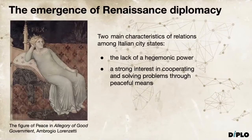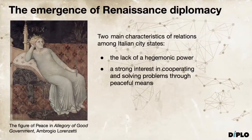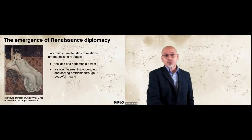The emergence of Renaissance diplomacy is usually associated with two main characteristics of relations among Italian city-states. First is the lack of hegemonic power, and second is a strong interest in cooperating and solving problems and conflicts through peaceful means. These two building blocks are important because we'll see them later on during the 19th century, where Kissinger described that period as a balance of power period. The key is that there is no hegemonic power and that it is better to negotiate, engage, and reach compromise than fight and impose military solutions.